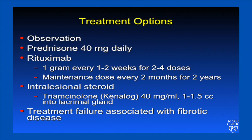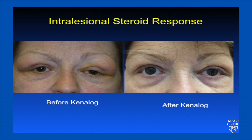Several treatment options are available for IgG4-related disease. Patients without organ-threatening disease can be observed, but most patients with orbital disease will be treated. Initial treatment is prednisone 40 milligrams daily. Patients who become steroid-dependent or who have steroid-related side effects are typically treated with rituximab, delivered as one gram every one to two weeks for two to four doses, with a maintenance dose every two months for two years. We also have experience with intralesional steroid — specifically triamcinolone (Kenalog) 40 milligrams per mL in a one to one-and-a-half cc dose into the lacrimal gland. Treatment failure can be associated with fibrotic disease. Before-and-after images show significant reduction in lacrimal gland swelling following Kenalog injection.